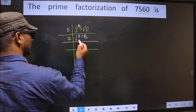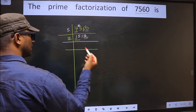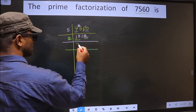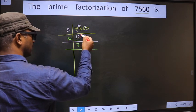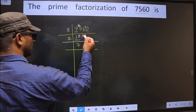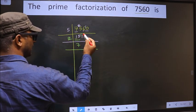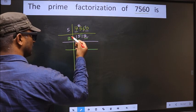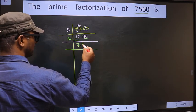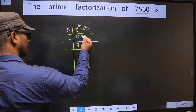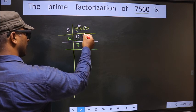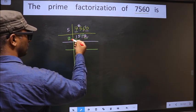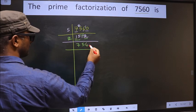So here we have 15. A number close to 15 in the 2 table is 2 sevens 14. 15 minus 14 is 1, carried forward making it 11. A number close to 11 in the 2 table is 2 fives 10. 11 minus 10 is 1, carried forward making it 12. When do we get 12 in the 2 table? 2 sixes 12.